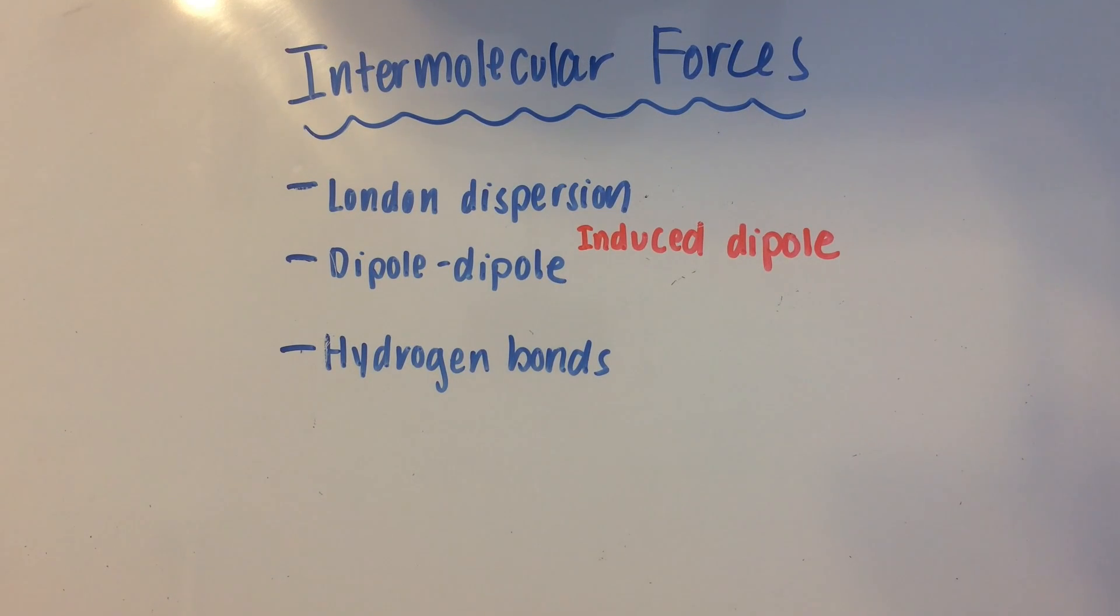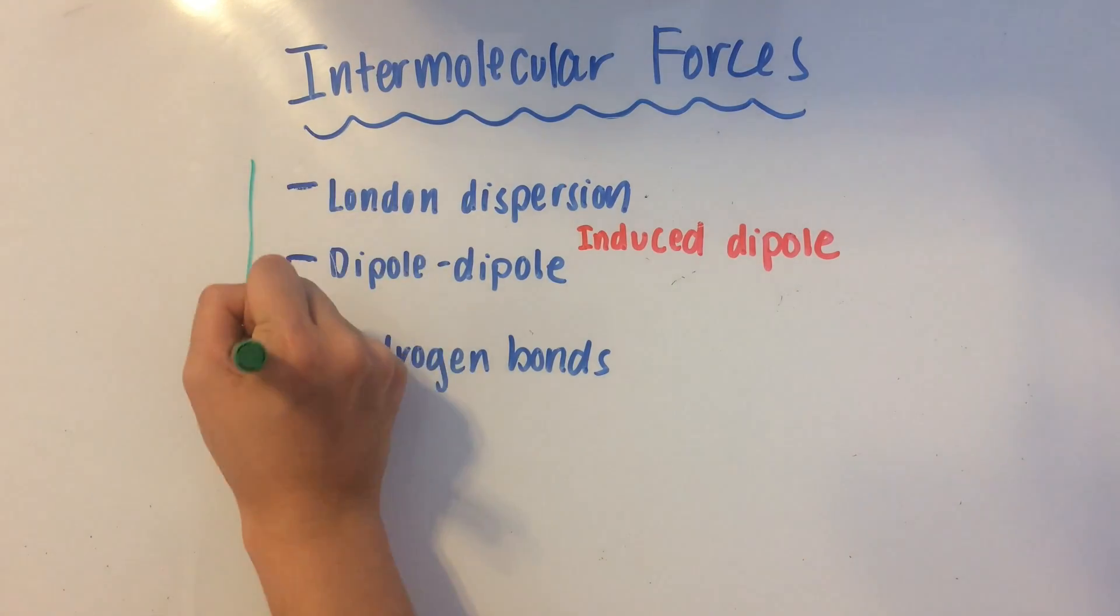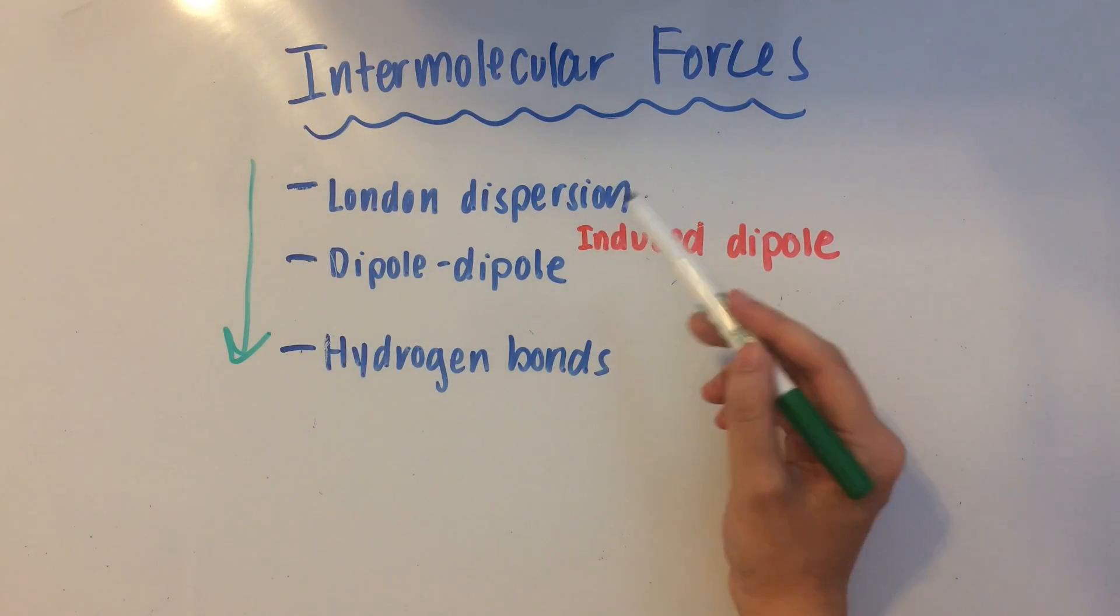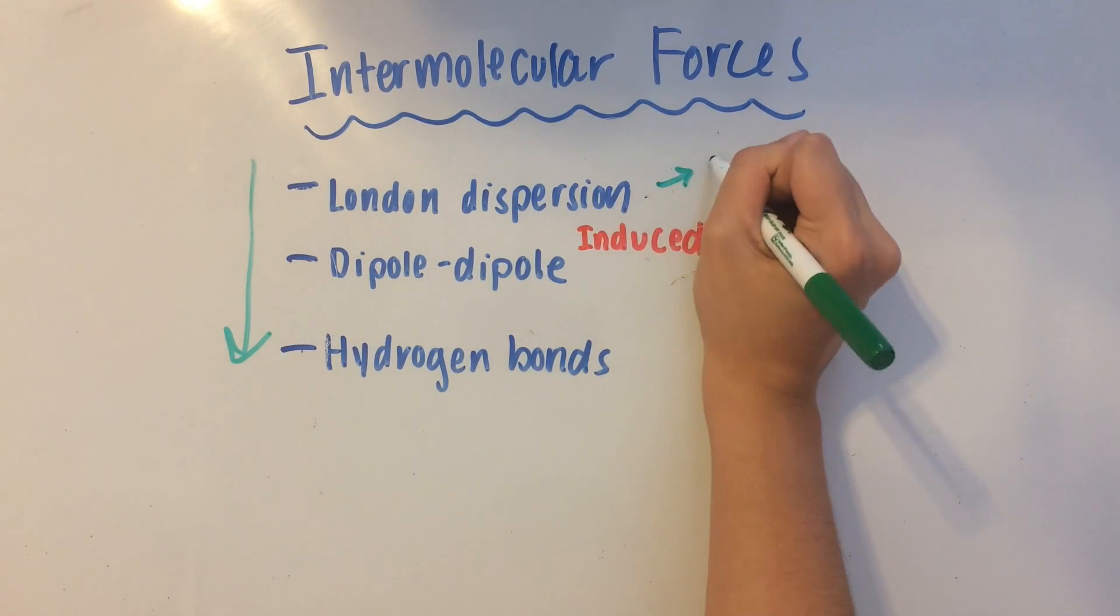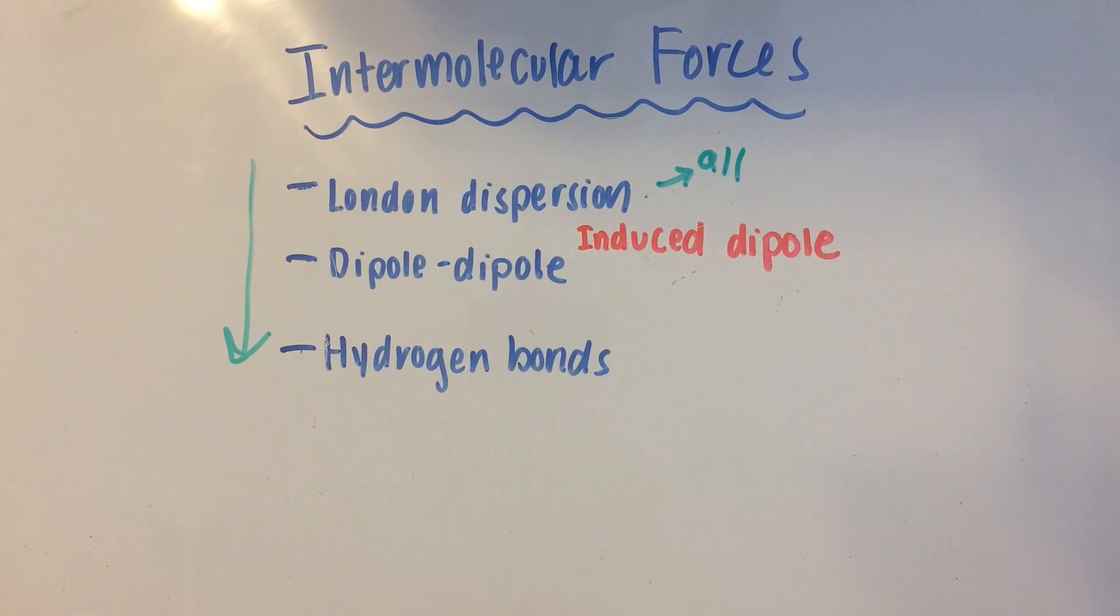So there's three main intermolecular forces that you need to know, and these are London dispersion forces, dipole-dipole interactions, and hydrogen bonds. These are all listed in order of increasing strength going down, so London dispersion forces are the weakest. And they also occur in all molecules, remember that.